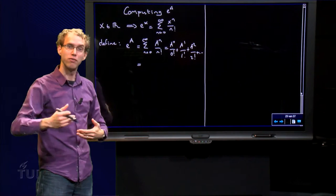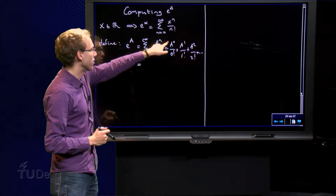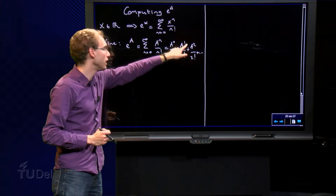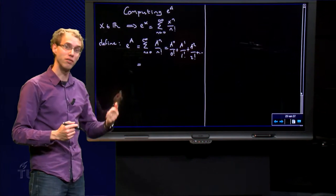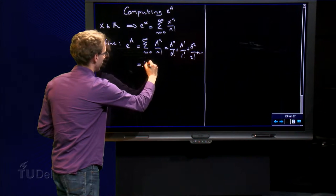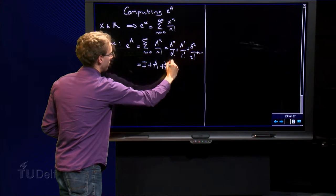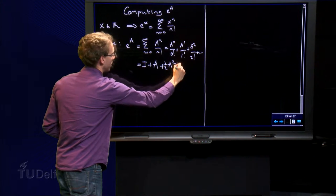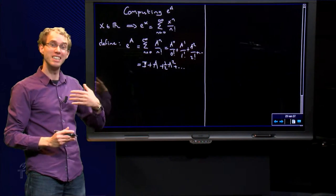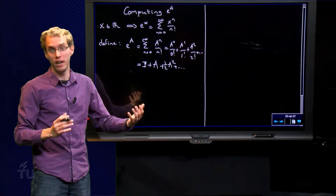If we write down the first few terms of the Taylor series, we see what we mean. We have a to the power 0 over 0 factorial, a to the power 1 over 1 factorial, a squared over 2 factorial, and so on. So if we write them out, we get something like I plus a plus one half a squared, and so on. So in order to compute the matrix exponential e to the power a, we only need to be able to compute powers of a, which we are able to do.